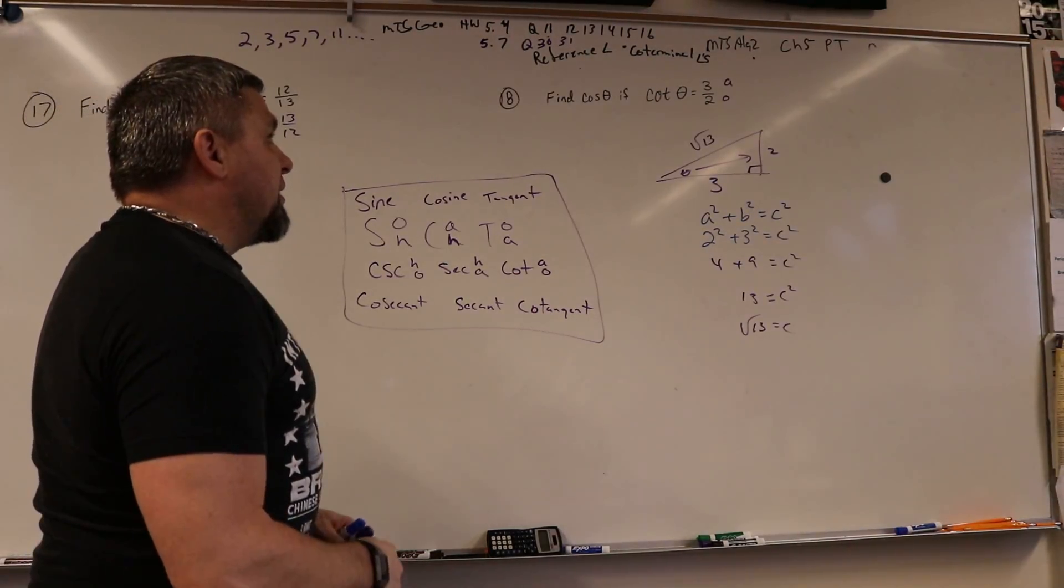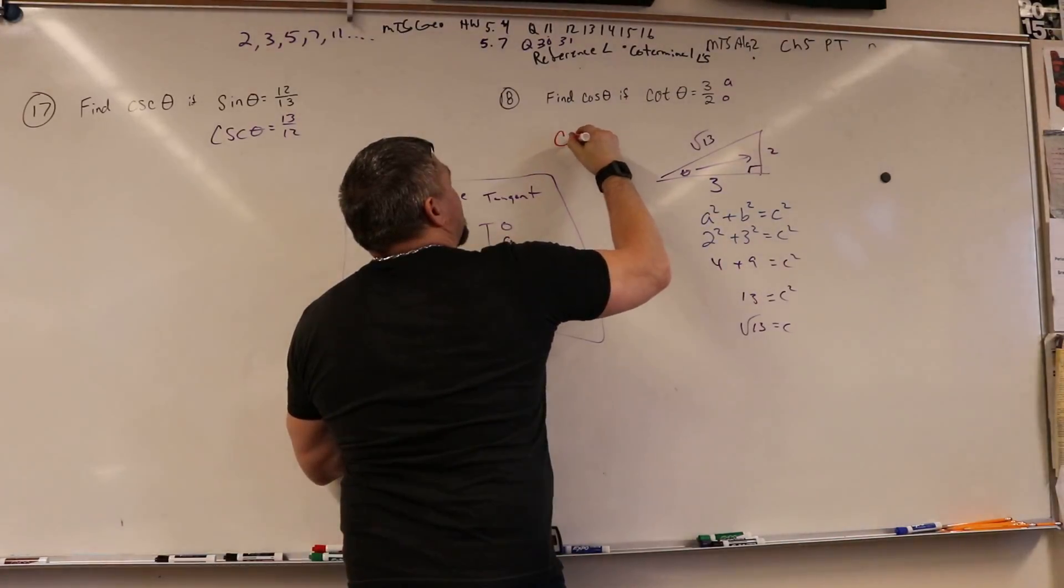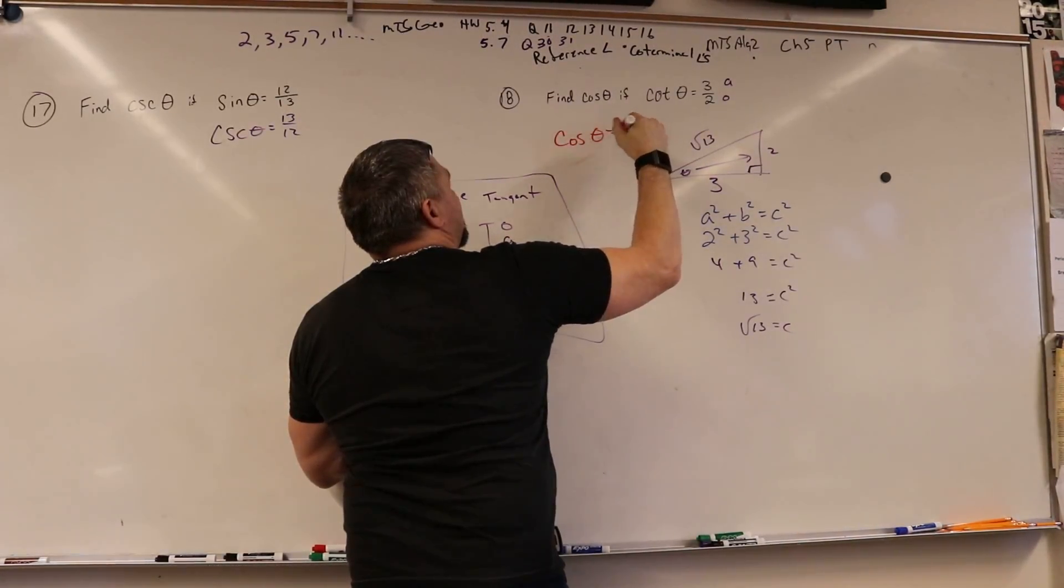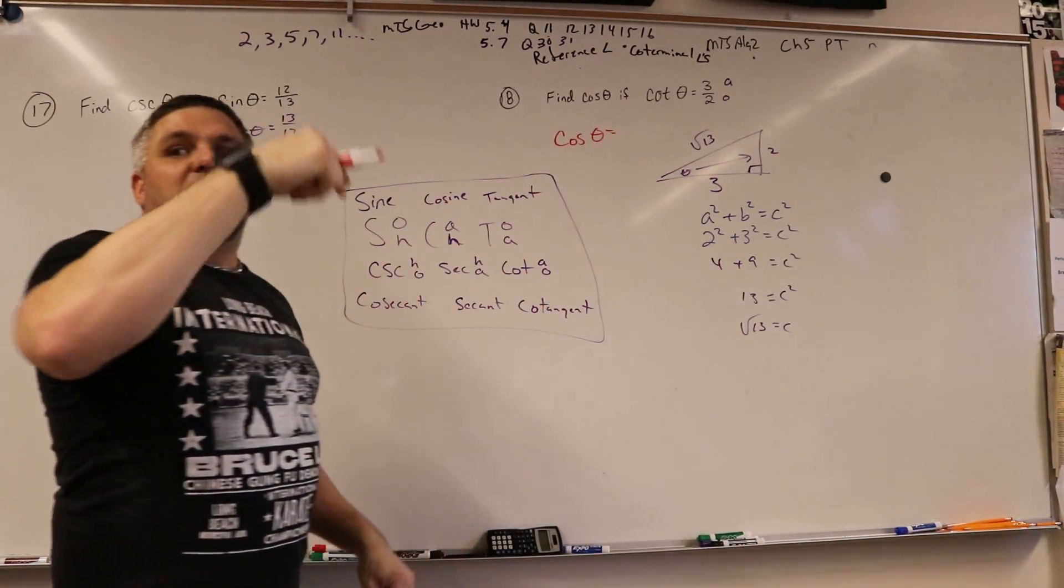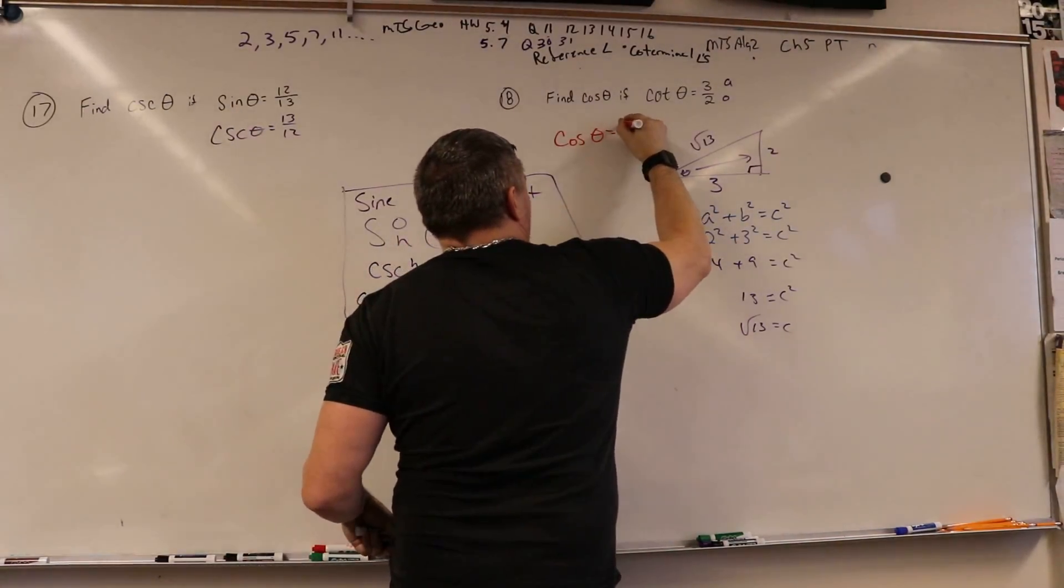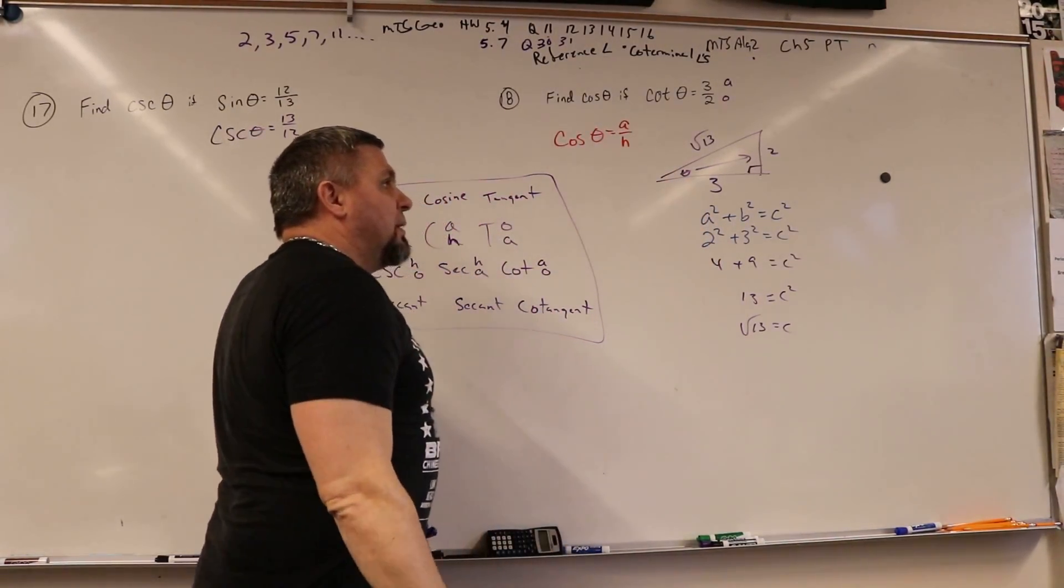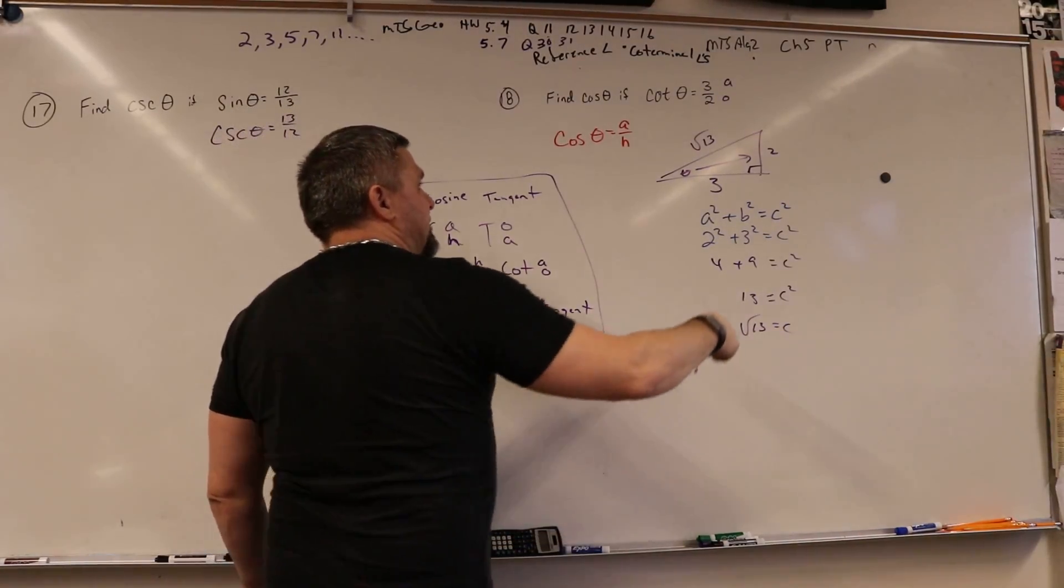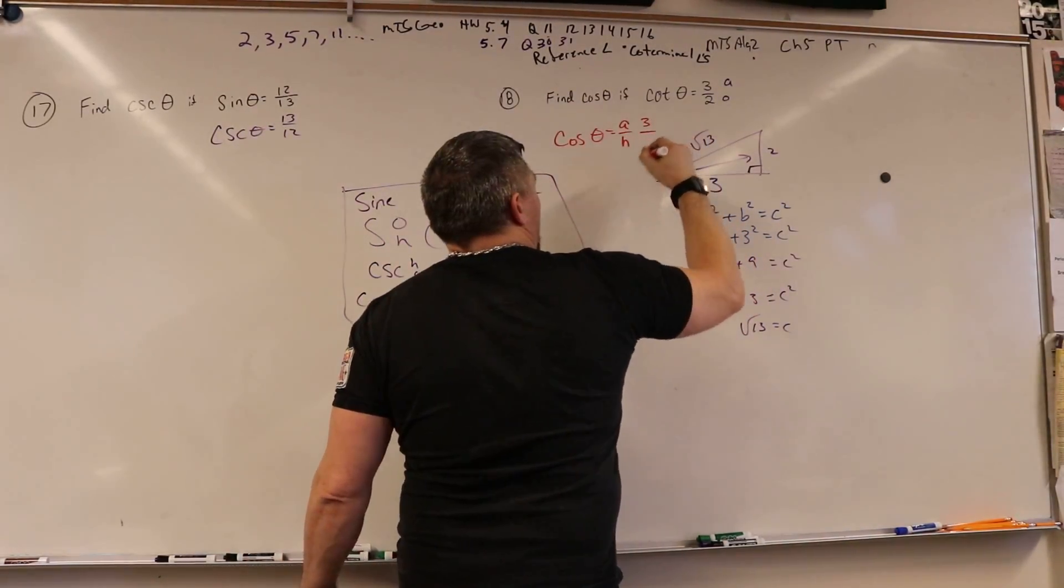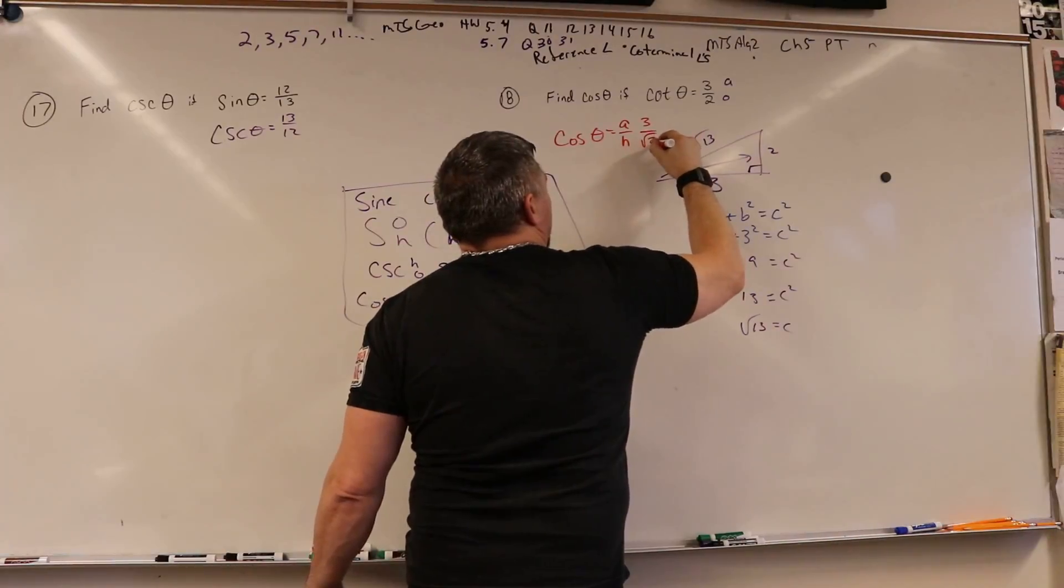18, so now we need to go cosine. So cosine of theta is equal to, so CAH TOA, so adjacent over hypotenuse, right? So my adjacent is 3, but my hypotenuse is the square root of 13.